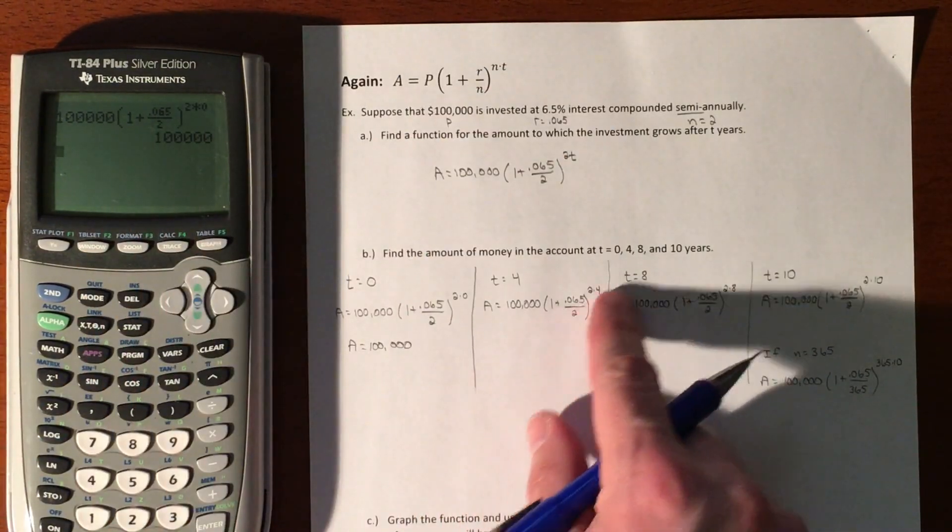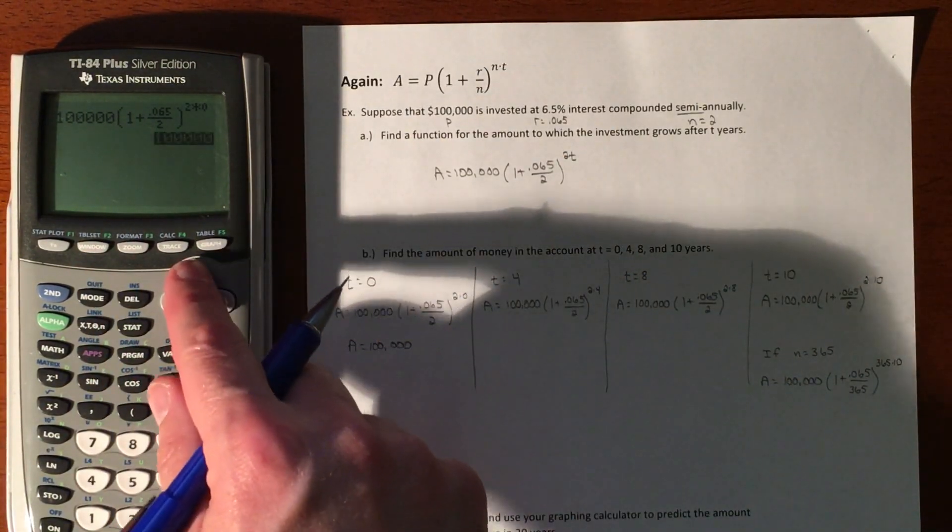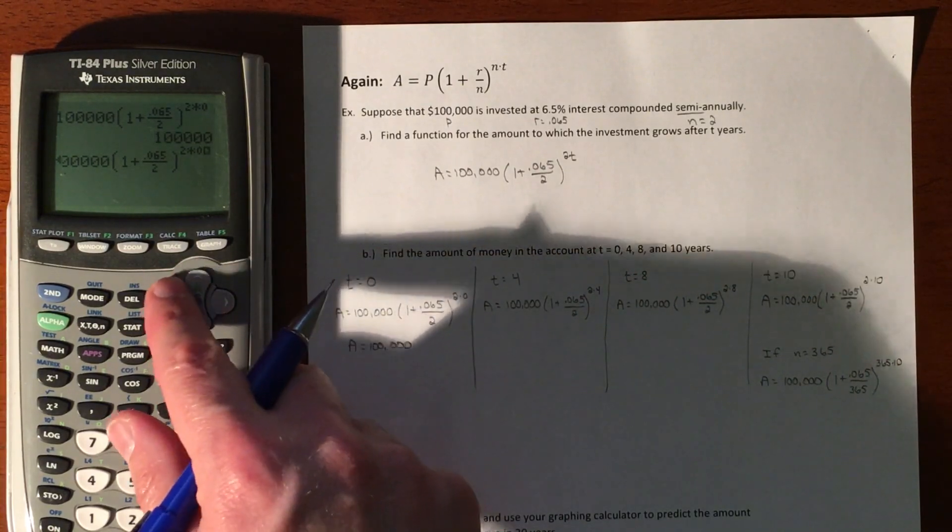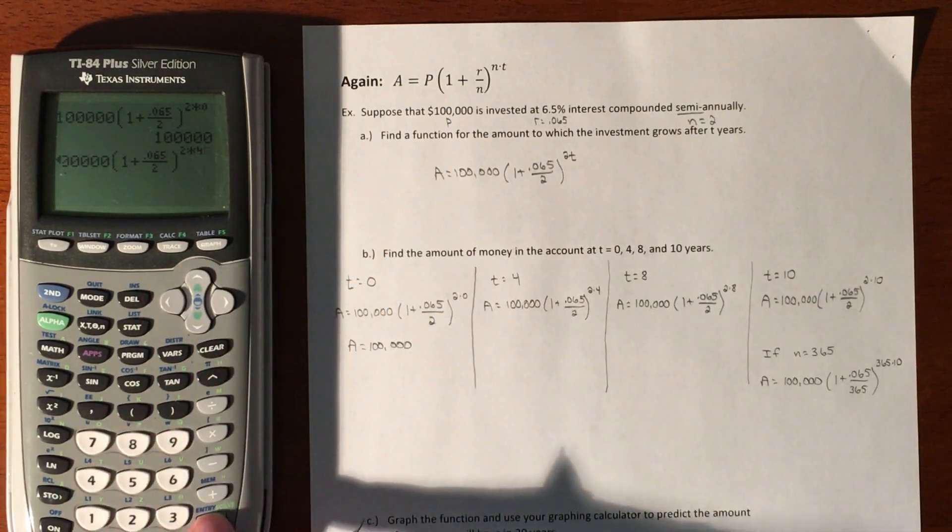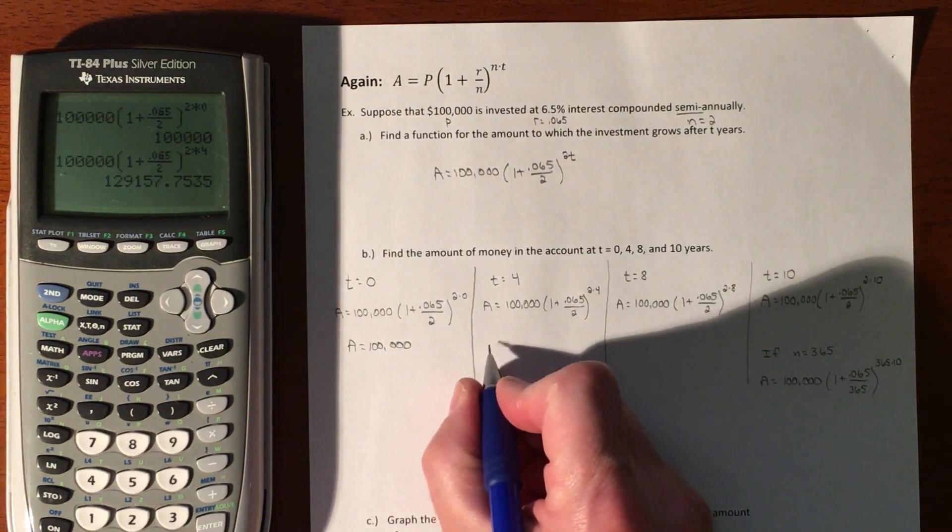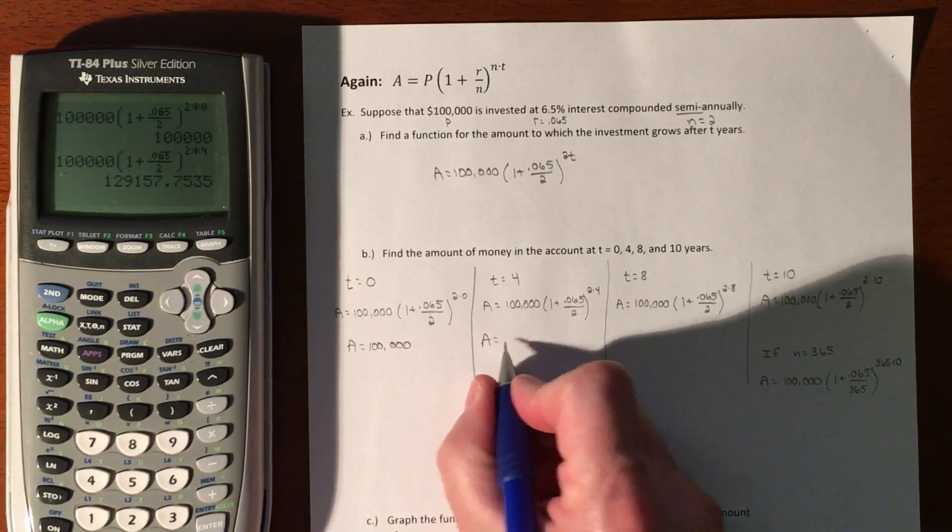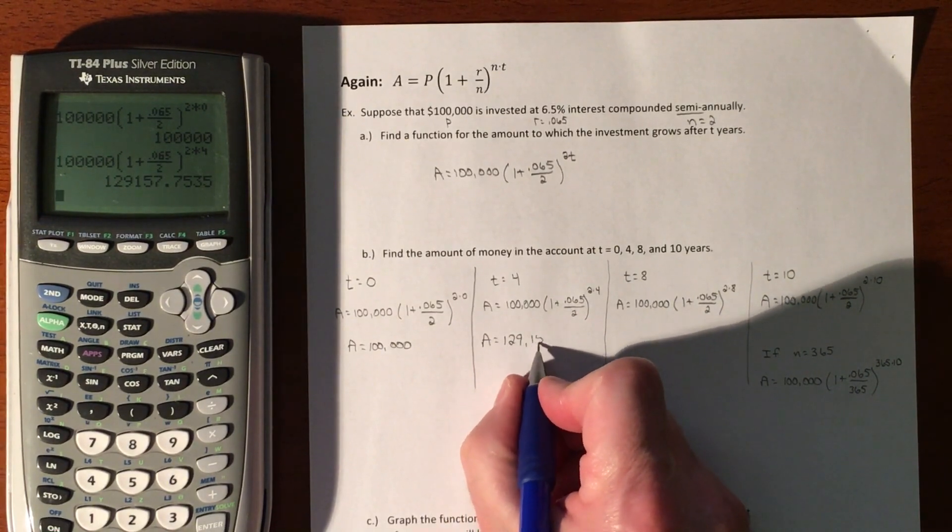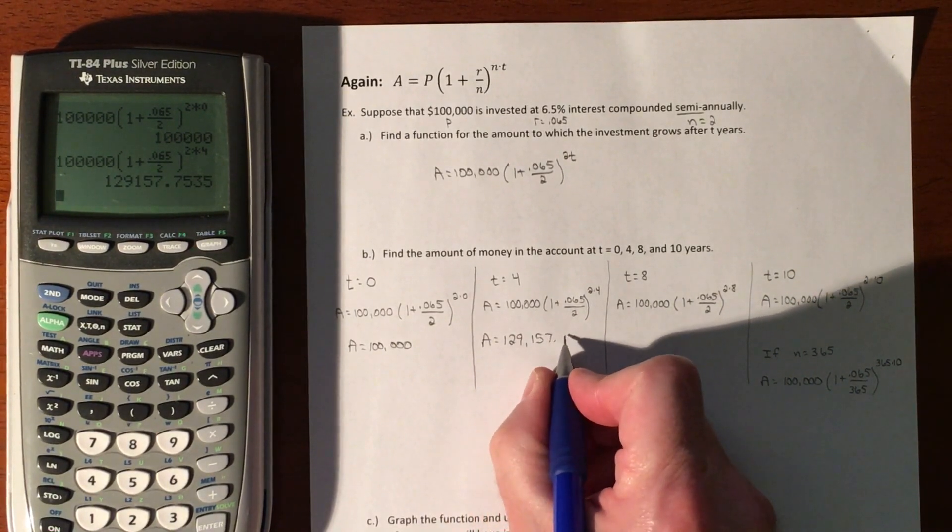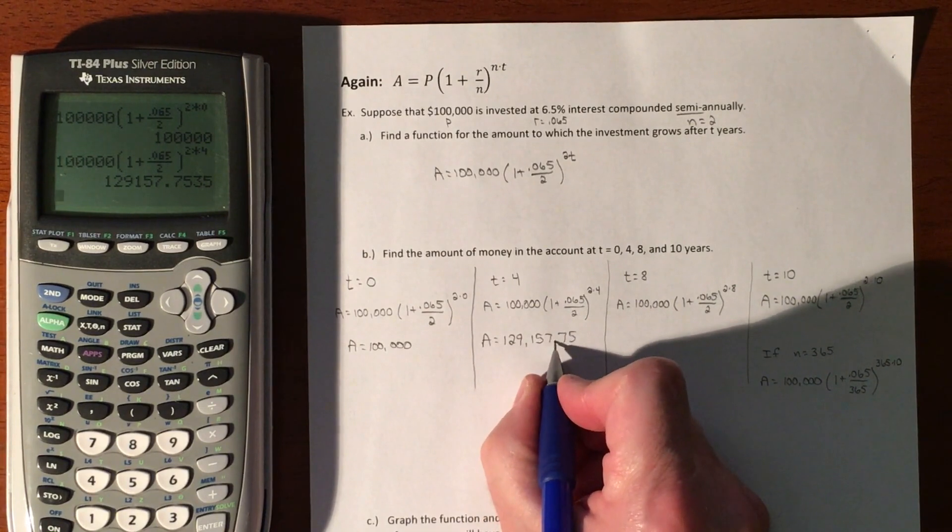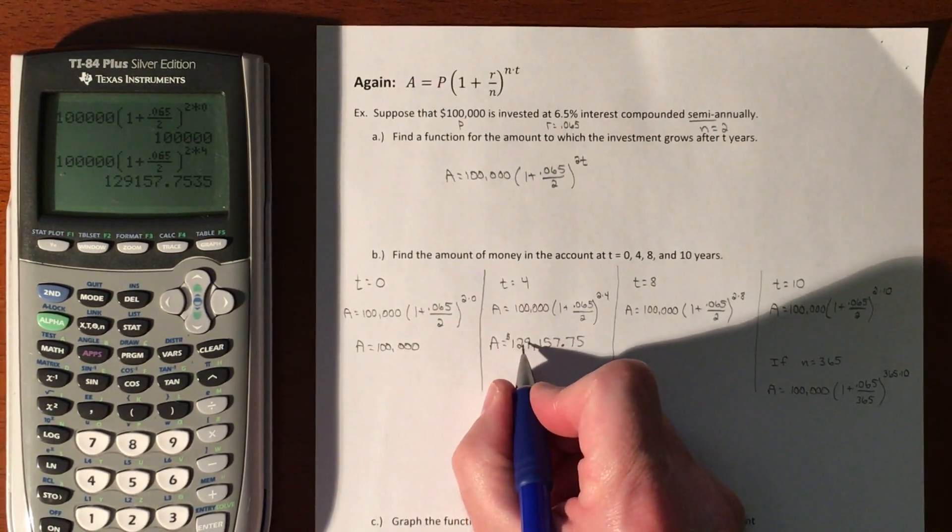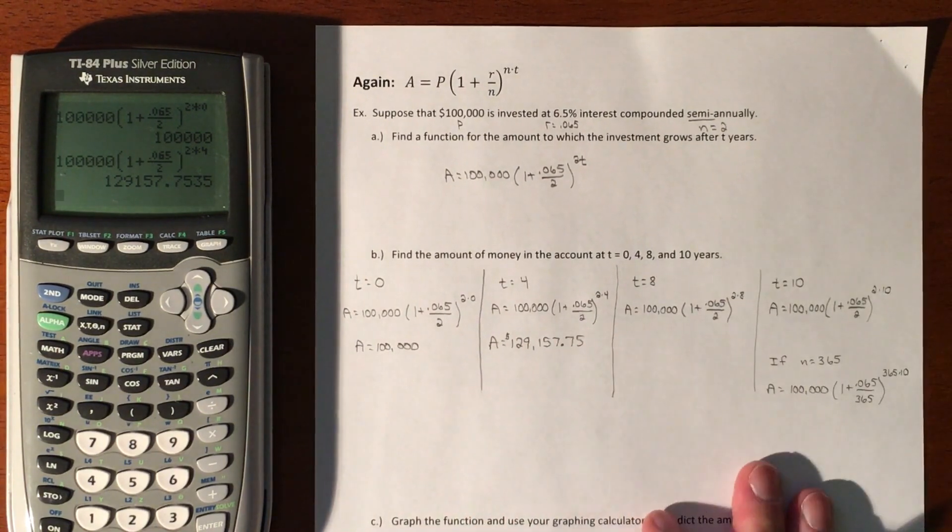The good thing about the calculator is we can just move up and highlight this and turn our zero into four. So our $100,000 in four years would become $129,157.75. We'd make almost $30,000 in four years worth of interest earning interest compounding.